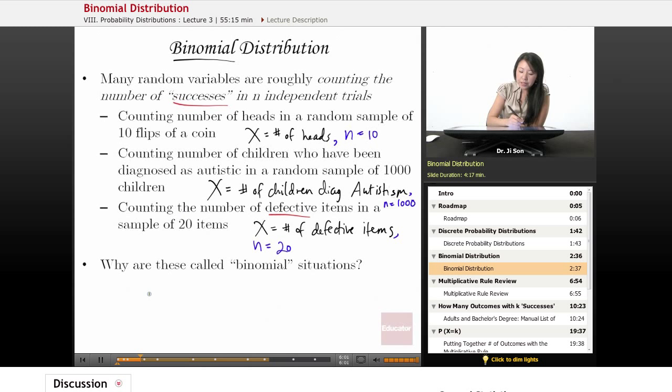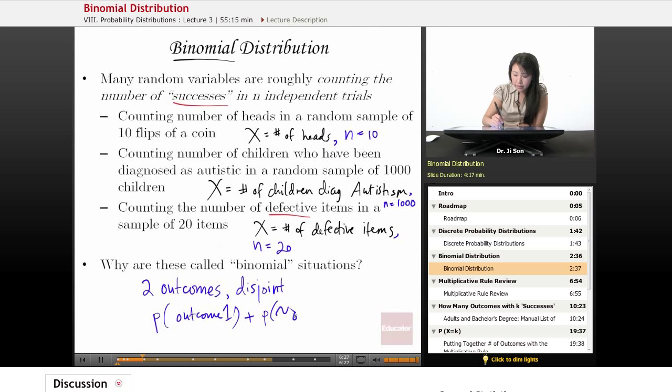So these are binomial situations because there's two outcomes that are disjoint. It's one or the other. And if you add the probabilities of those outcomes, so if you add the probability of outcome one plus the probability of not outcome one, then you should get one. And so another way to put it is the probability of one outcome, outcome one, is equal to one minus the probability of not that outcome, not outcome one.